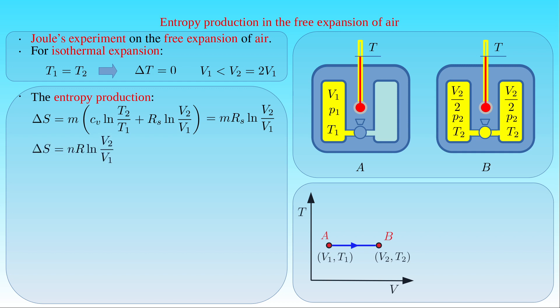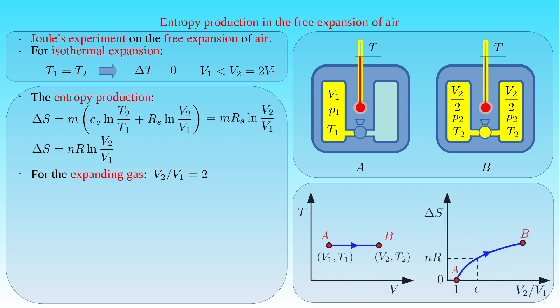We can also write the multiplicative factor of the logarithm as the amount of substance N times the universal gas constant R. Since the gas doubles its volume by filling both identical containers, the volumetric ratio V2/V1 equals 2 and its logarithm is positive. The graph of the change in entropy as a function of the volumetric ratio shows entropy production represented by the logarithmic curve connecting states A and B. Since the logarithmic function is monotonically increasing, the entropy of the gas is maximum in the final state, and the change in entropy is positive.